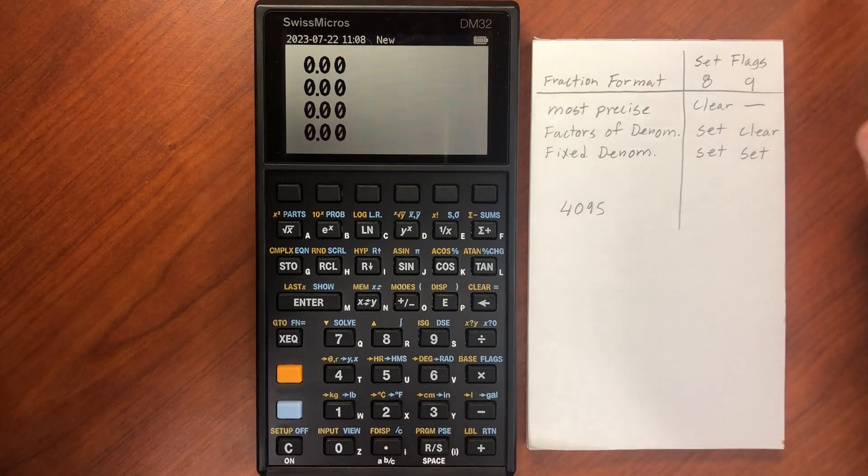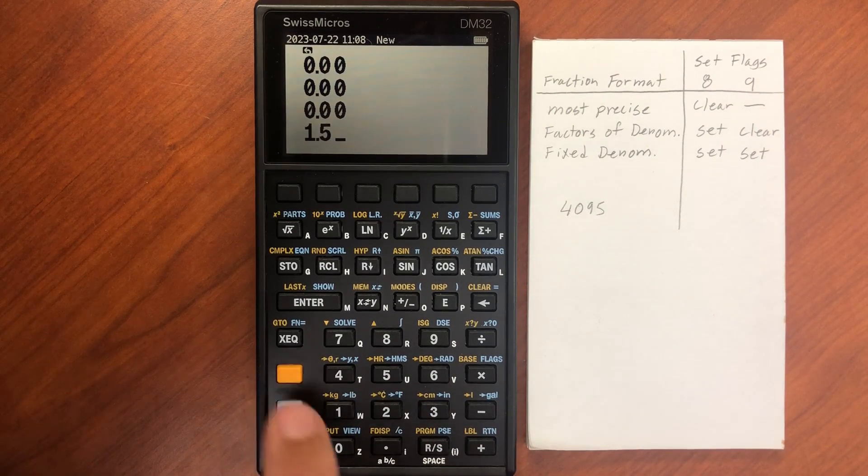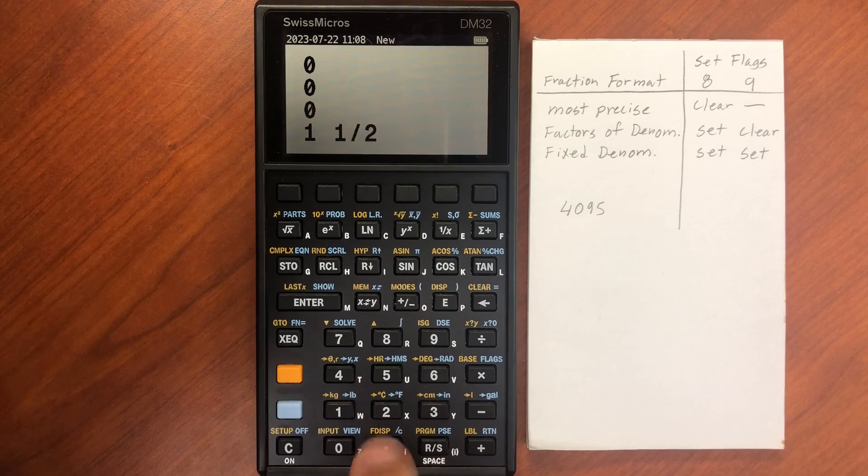So if I want to enter in, say, 1.5, I can display that as a fraction by going to Shift and then FDISP, and I've got 1.5 displayed as a fraction.